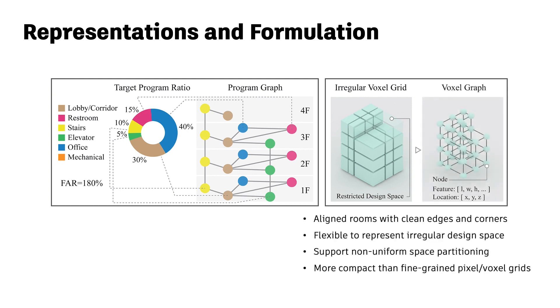Also, we see each partitioned cell as a node and represent the design space as another graph called voxel graph. Voxel graph can flexibly represent the irregular design space and the non-uniform space partitioning, and is very compact compared to fine-grained pixel or voxel grids.